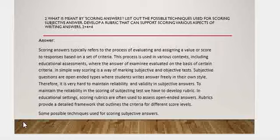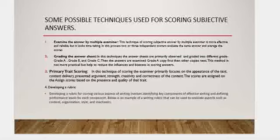Here are some possible techniques used for scoring subjective answers. First, examining answers by multiple examiners: this technique is more effective and reliable but time-consuming. Two or three independent scorers evaluate the same answer and average the scores. The averaged score is then declared as the final result.